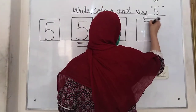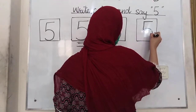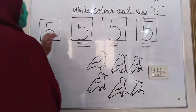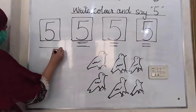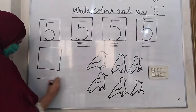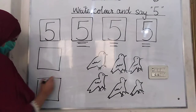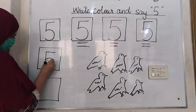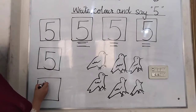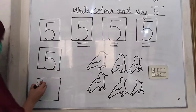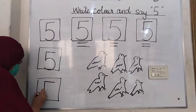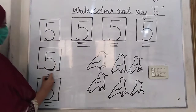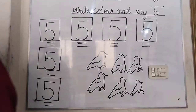Again: make a sleeping line, then make a standing line, then make a half circle. Which number is this? 5. Today we are writing number 5.